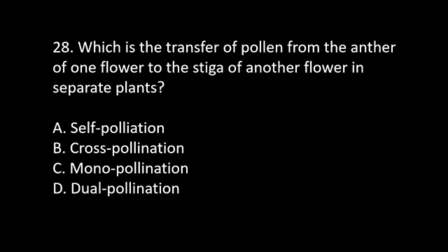Number 28. Which is the transfer of pollen from the anther of one flower to the stigma of another flower in separate plants? A. Self-pollination. B. Cross-pollination. C. Mono-pollination. D. Dual-pollination. The answer is B. Cross-pollination.